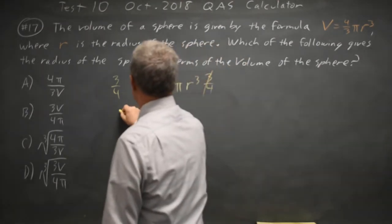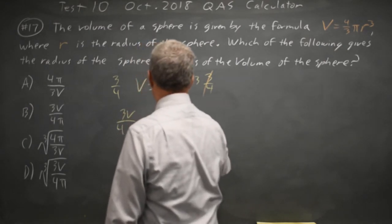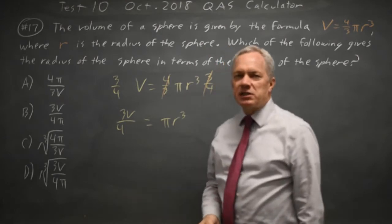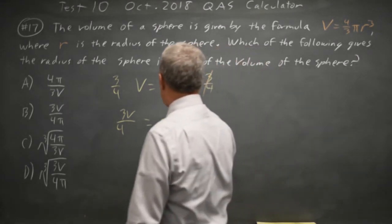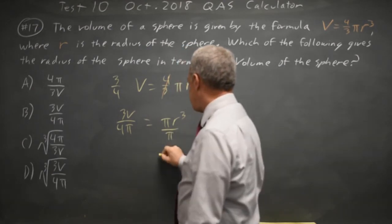So I have 3v over 4 equals pi r cubed, and I'm trying to get r by itself, so I'll divide both sides by pi. I could have done that in one step, but I'm less likely to get careless if I do it in two steps.